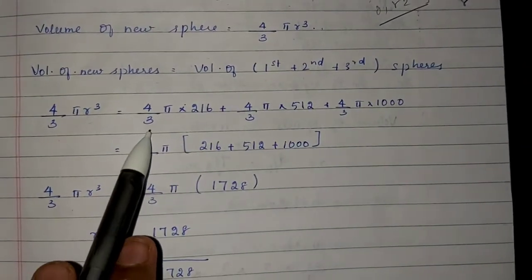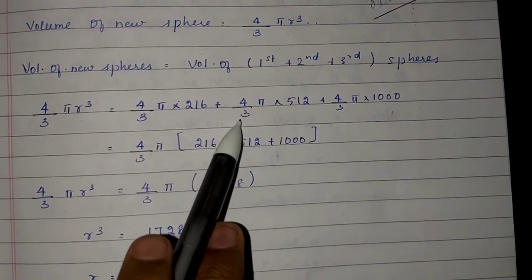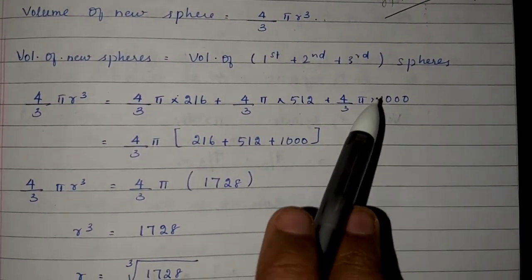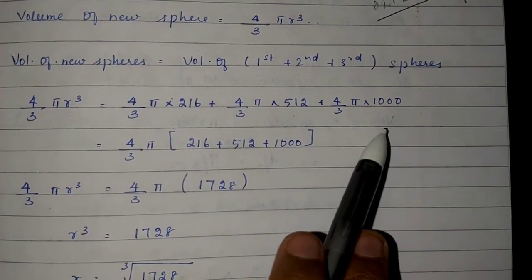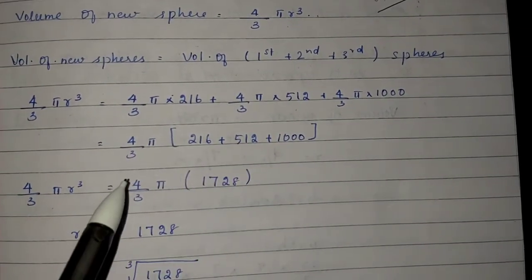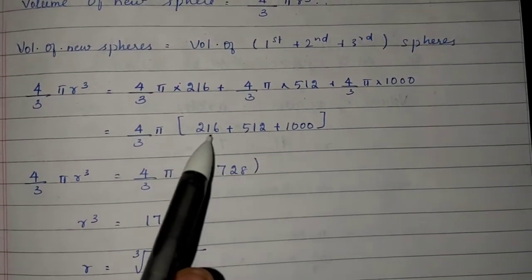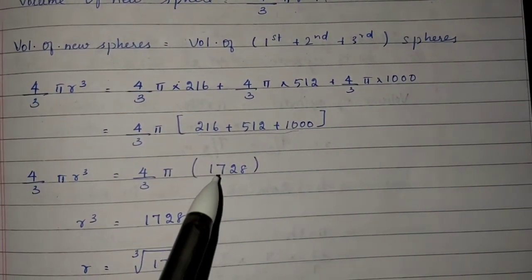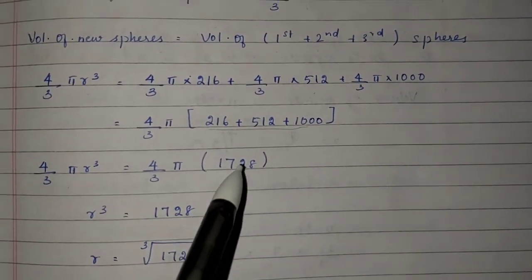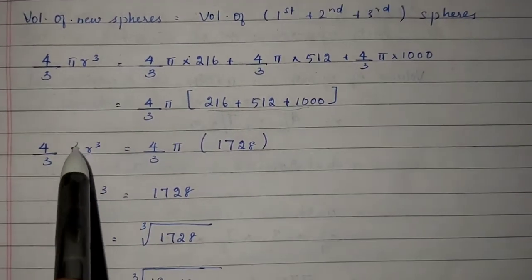Adding the three volumes: (4/3)π × 216 + (4/3)π × 512 + (4/3)π × 1000. Taking (4/3)π as common: (4/3)π × (216 + 512 + 1000) = (4/3)π × 1728.